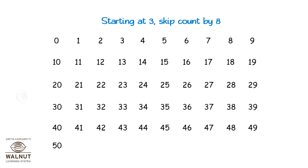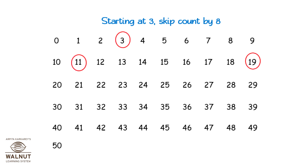Starting at three, skip count by eight: three, eleven, nineteen, twenty-seven, thirty-five, forty-three.